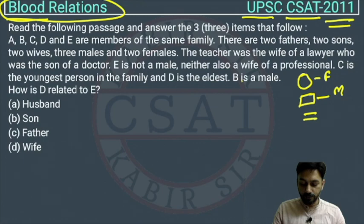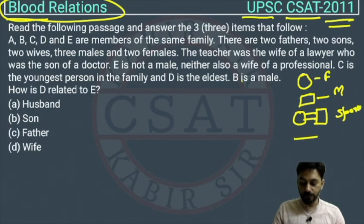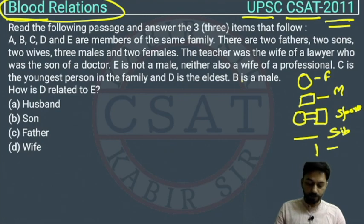The equal sign between a male and female represents a spouse relationship. A horizontal line represents siblings and a vertical line represents a father-son or father-daughter relationship.